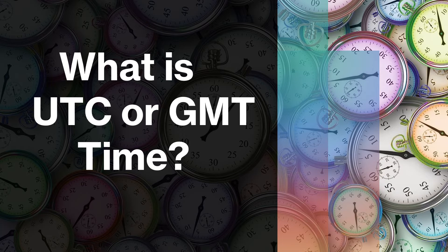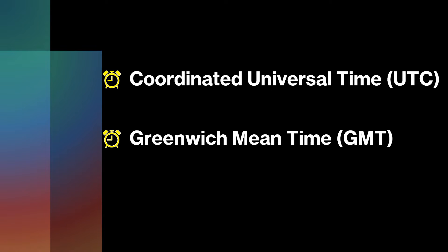Hello friends, welcome to TopGrainGK. This video is all about UTC and GMT. UTC means Coordinated Universal Time and GMT means Greenwich Mean Time. Both are global time standards used for coordinating timekeeping across different regions worldwide.